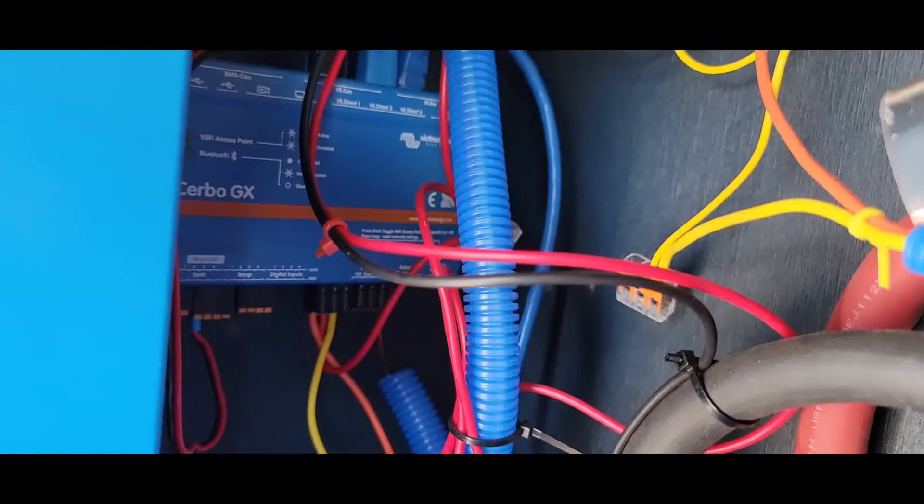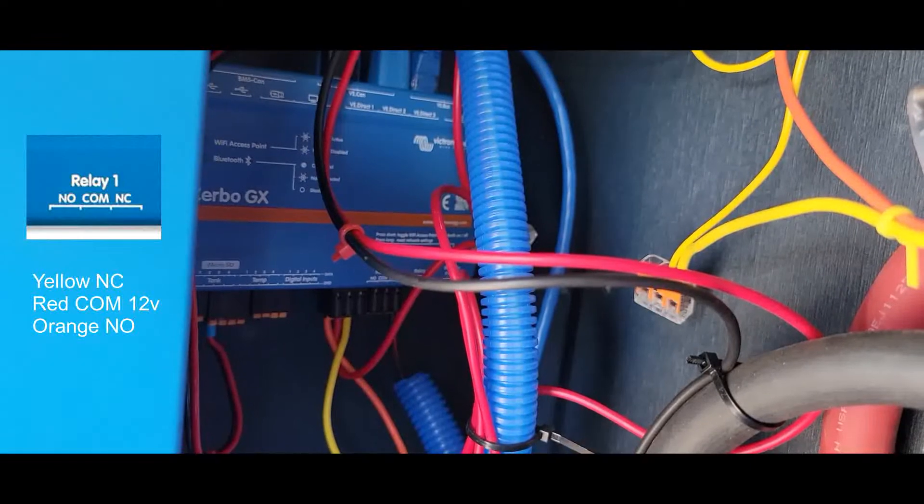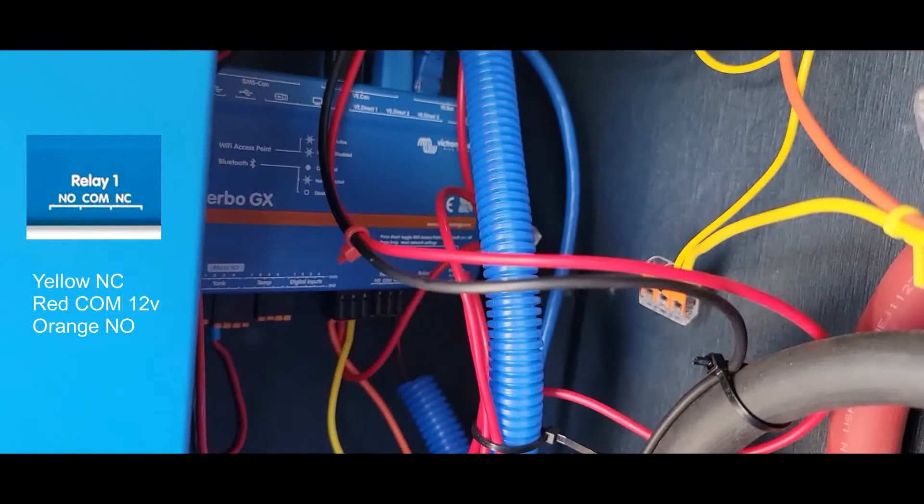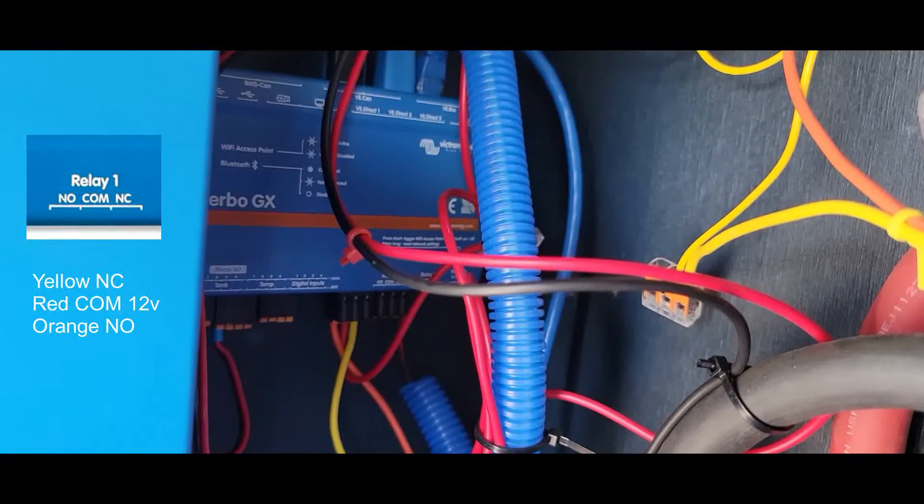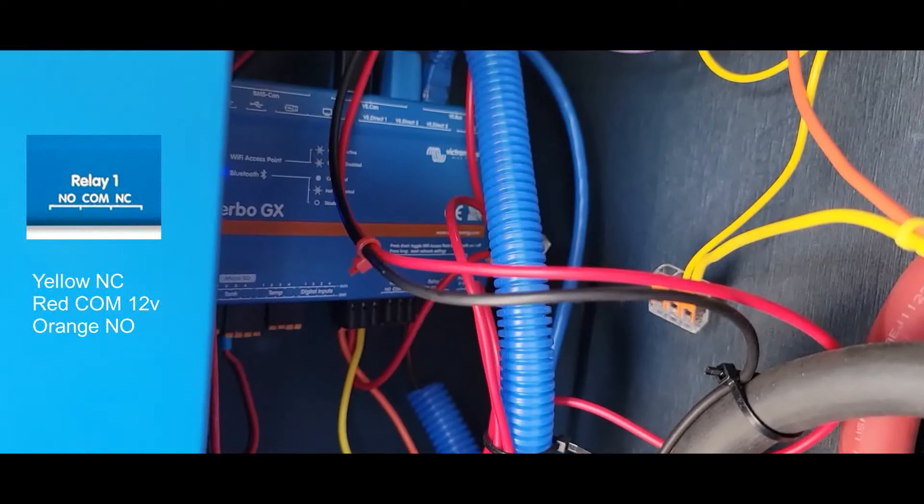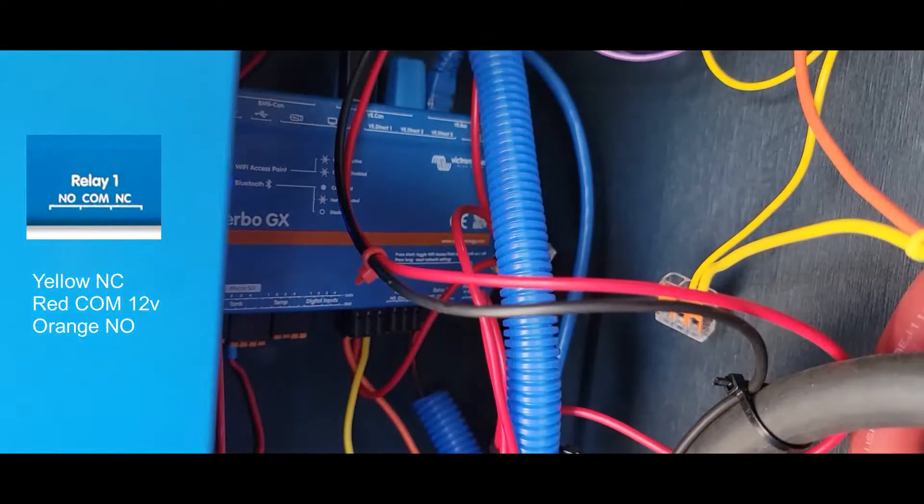Looking at the Cerbo GX, you can see that there's a positive wire going into the common, which is the middle one. And then the stop is on the right-hand side, which I believe that's the normally open. And then the start is on the normally closed.